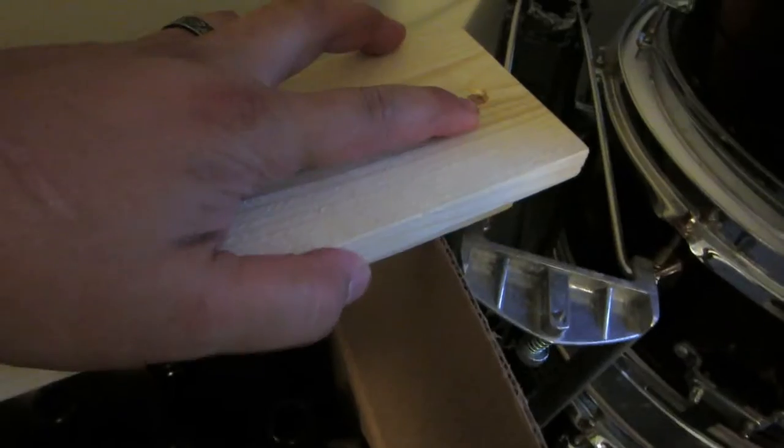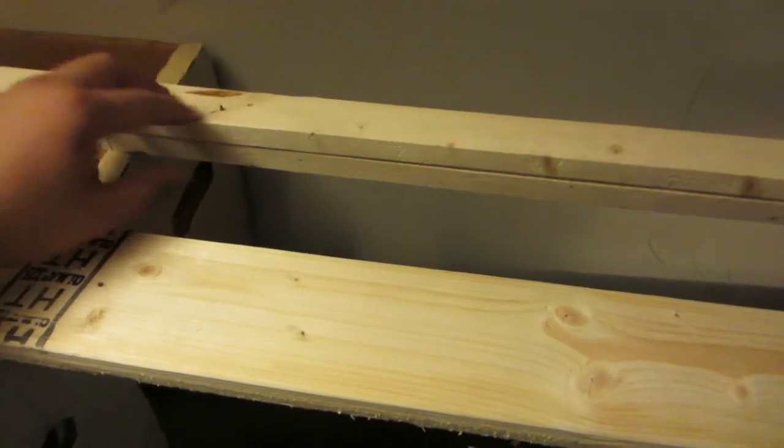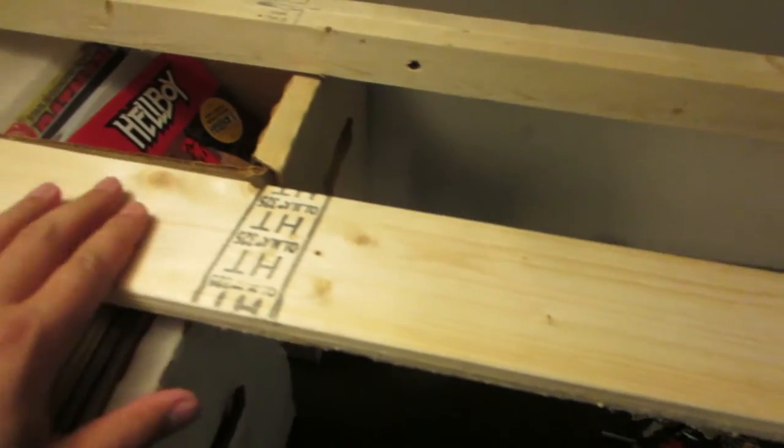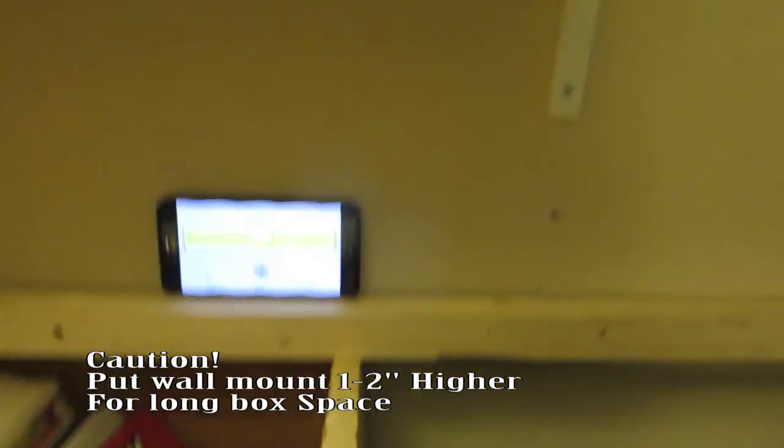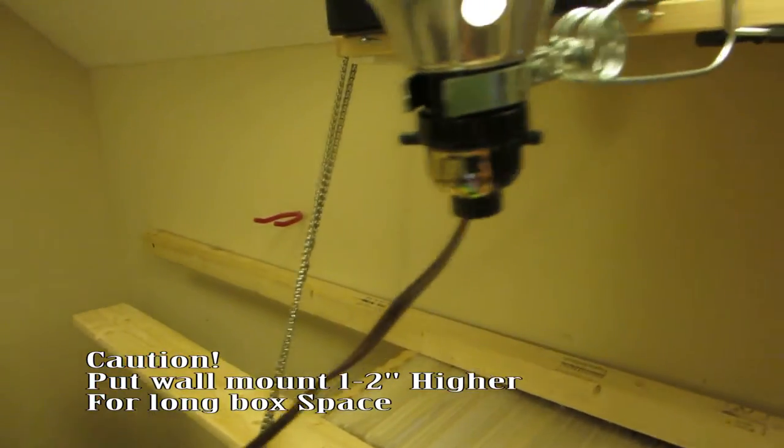So we pull the screws out from the front plate, which is the bigger board, and what we're gonna do is we're gonna separate these two. Okay, so now that we have those separated, this is gonna be the part where the actual comics are gonna be standing on, and this is like the front cover of it basically.